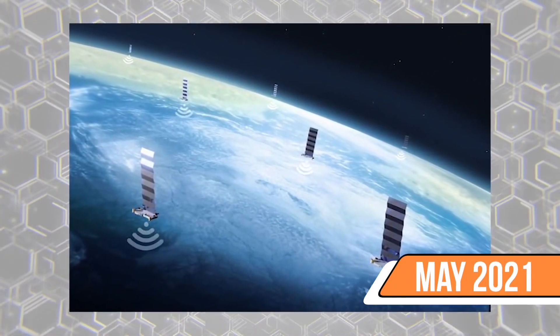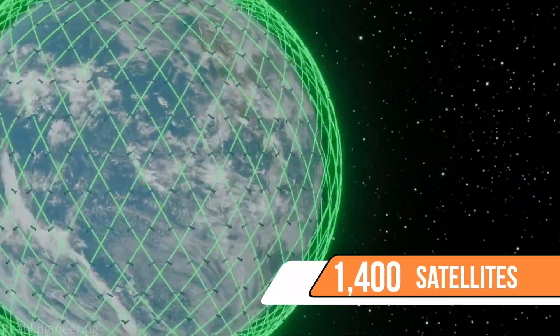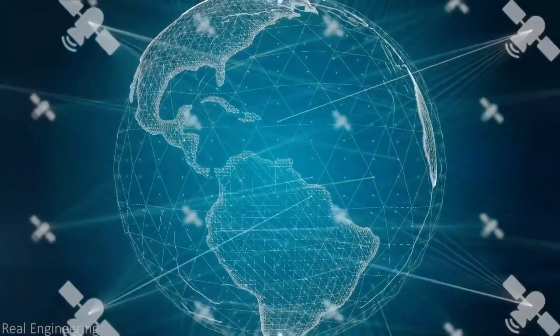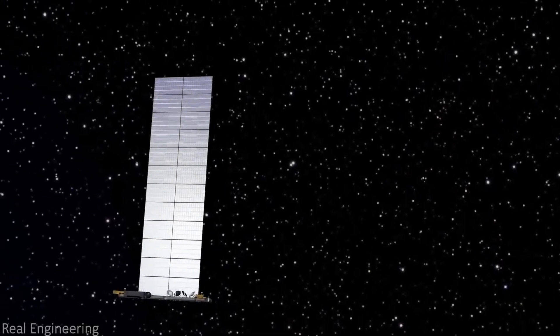As of May 2021, there are now over 1,400 operational Starlink satellites above our heads and many more plan to be shot into the sky.